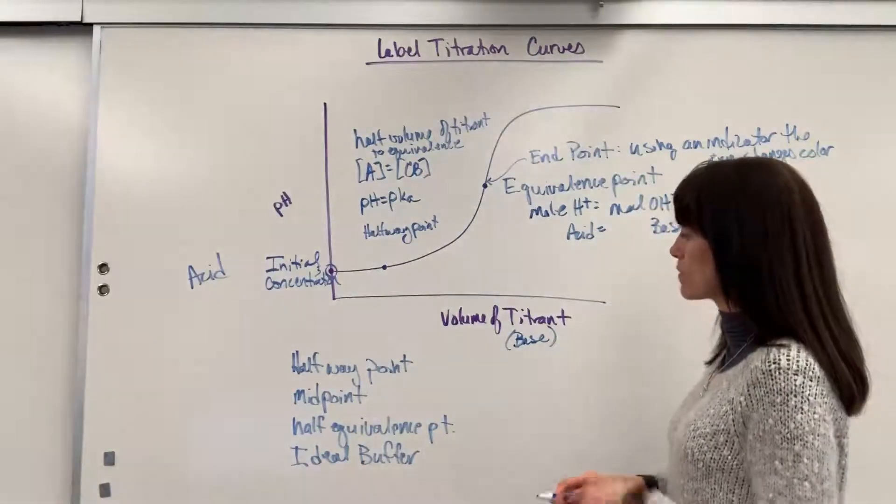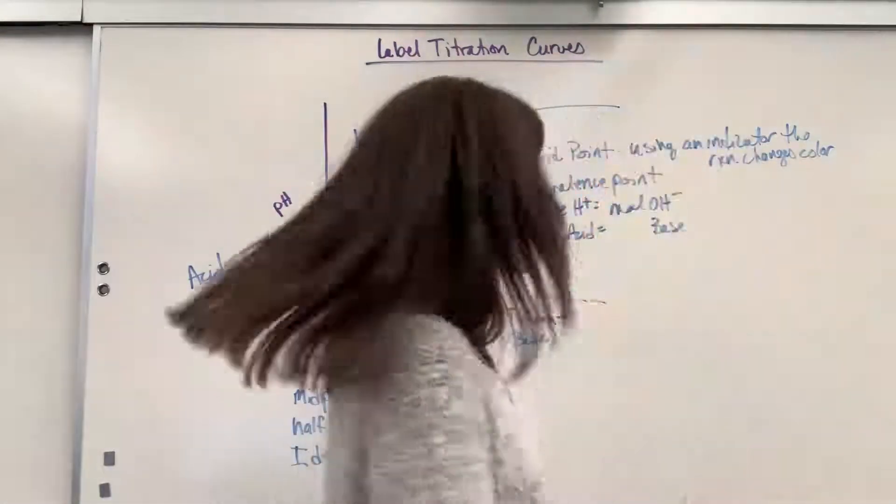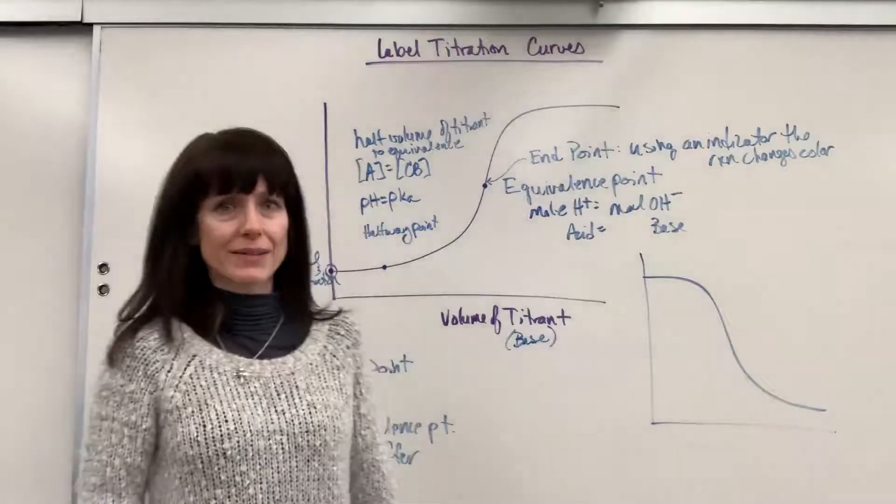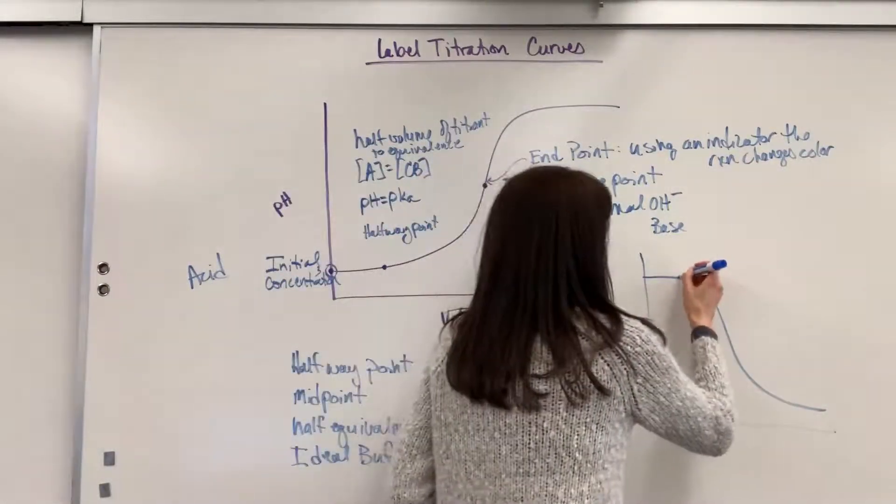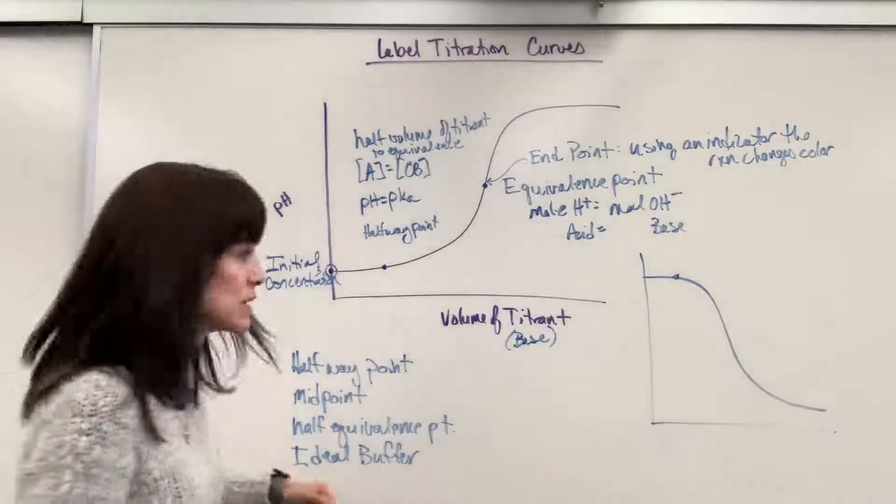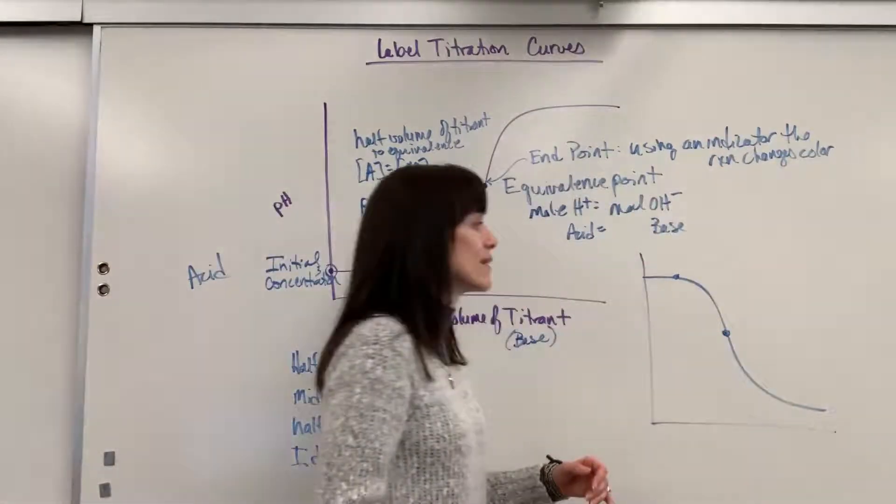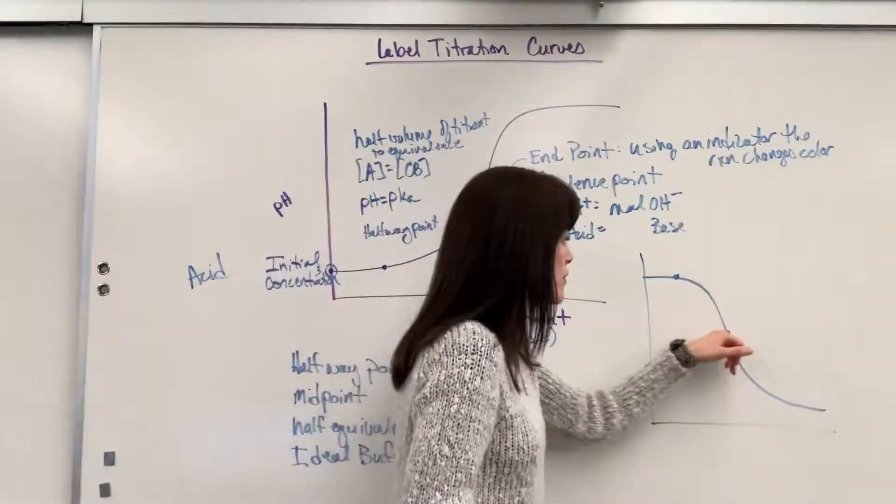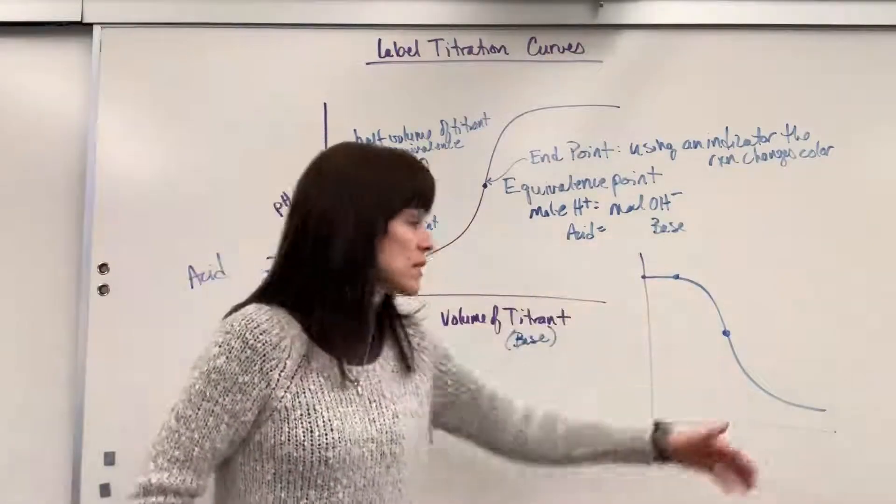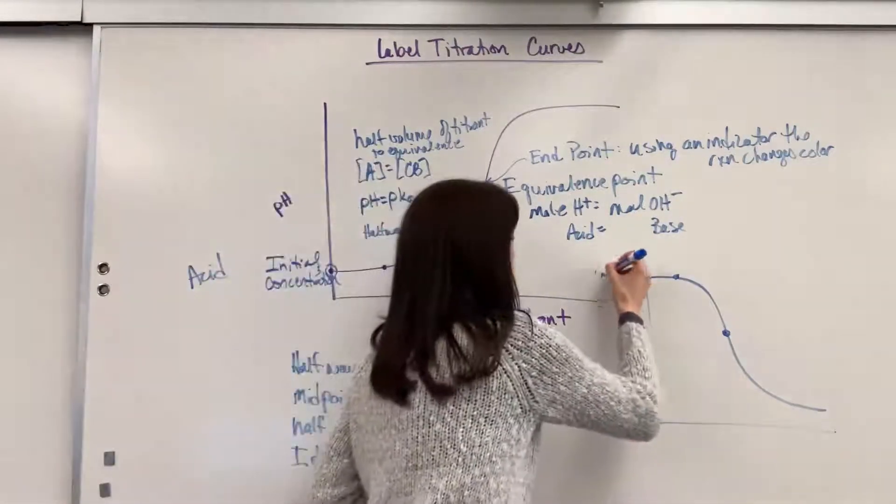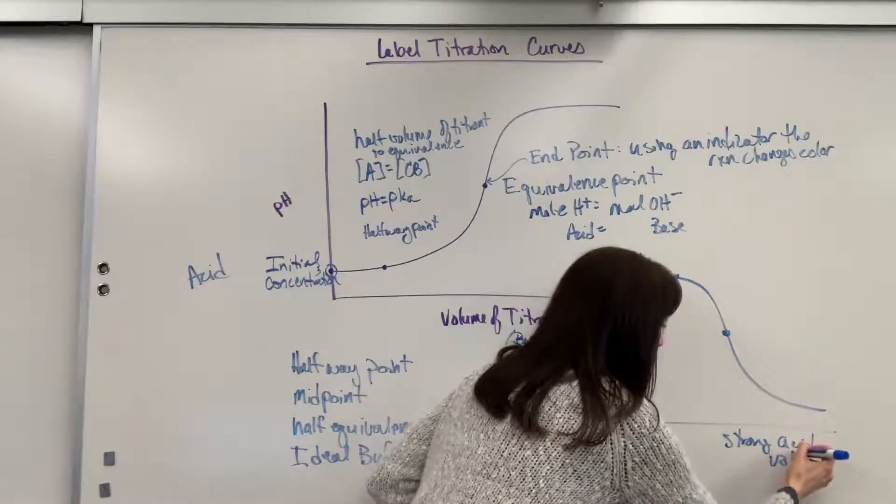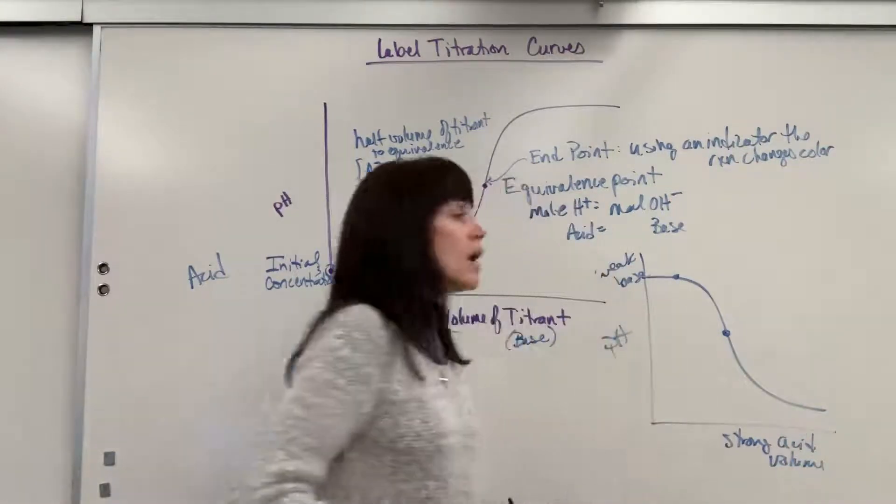Now, remember, we could do this opposite. I could take a weak base and I could titrate it with a strong acid. You'd start here at about a pH of 11. Here's going to be your halfway point, all right? Also, midpoint, half equivalence. There's your equivalence point where the moles of the acid equal the moles of the base. You're also going to have your end point right here. And this would be the initial concentration of the weak base. So same, same thing if you're doing, in this case, I'm going to write it down, that would be a weak base with a strong acid. So this would be your volume of the strong acid and this would be the pH of that weak base.